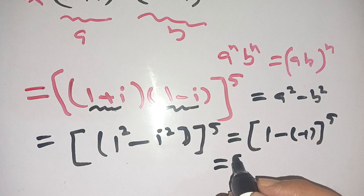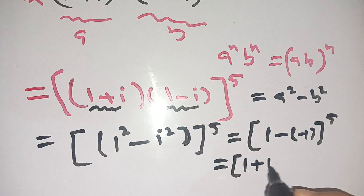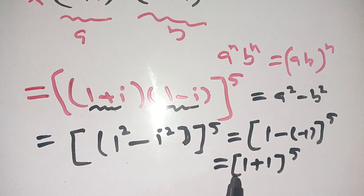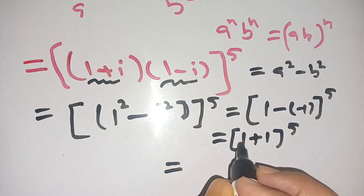It is equal to [1 + 1]^5, which becomes 2^5.